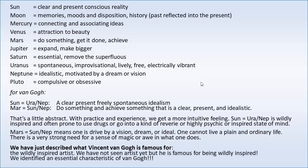Mars equals Sun-Neptune means: do something and achieve something that is clear, present, and idealistic. Now it's a little abstract, but with practice and experience you get a more intuitive feeling about what it means. Uranus-Neptune is wildly inspired — visionary, psychic. To have the sun there means you are, in real life at this moment, Uranus-Neptune: very prone to go into some kind of reverie, to be in a highly psychic or highly inspired state of mind.